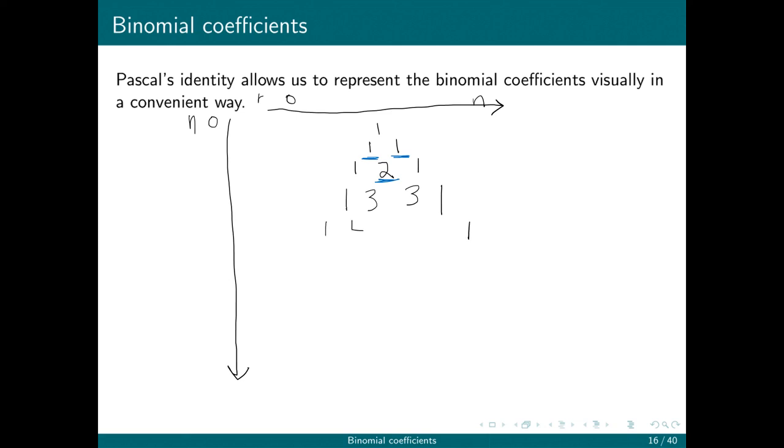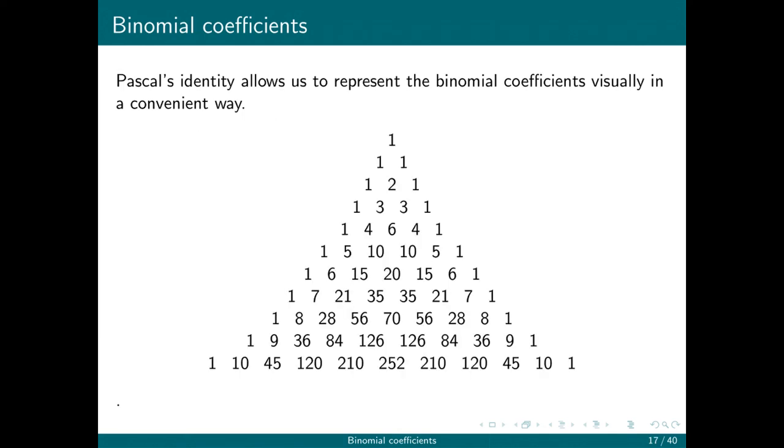The fourth row is 1, 4, 6, 4, 1. Again, the idea is that three plus three makes six, and that's using Pascal's identity. Then we get 1, 5, 10, 10, 5, 1, then 1, 6, 15, 20, 15, 6, 1. I can very quickly calculate the binomial coefficients using this recurrence relation in this thing that's called Pascal's triangle. And here is Pascal's triangle for the first 11 rows.